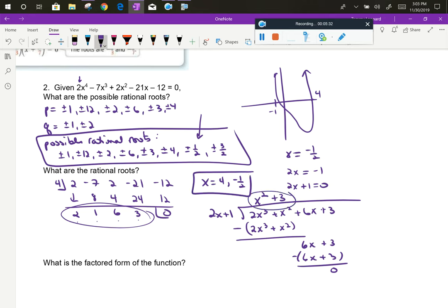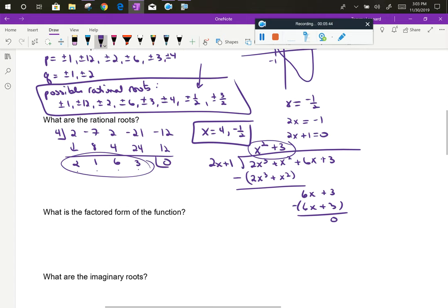Notice the remaining factor is x squared plus 3 and that wouldn't be factorable. I also don't have any more x-intercepts. I don't have any bounces that create a multiplicity. So I have found all of the rational roots.